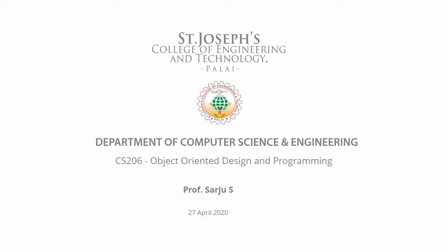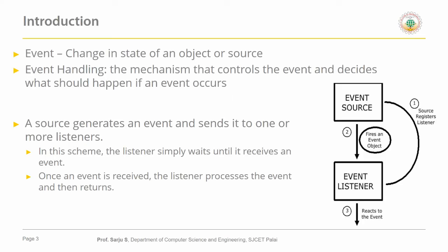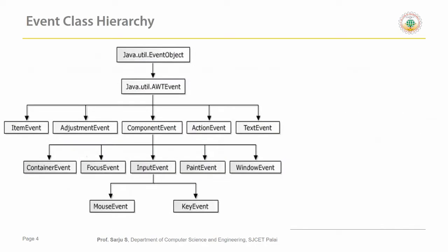Welcome to the lecture notes on object-oriented programming, fifth module. In the last video lecture we discussed about the delegation event model. In this lecture we are going to discuss about the event classes. An event means a change in state of an object or source. When a change happens in the state of an object, how this state change can be handled is discussed in the event handling mechanism. There are event sources and event listeners. Event listeners perform the action corresponding to an event and should register to the event source first.